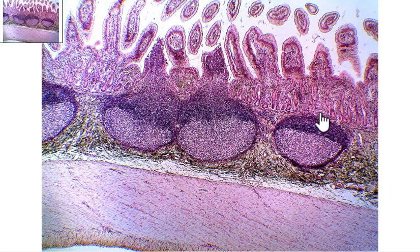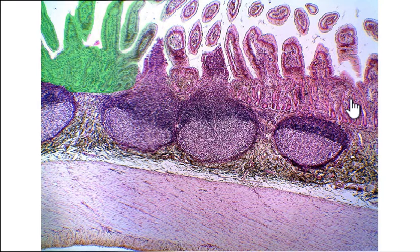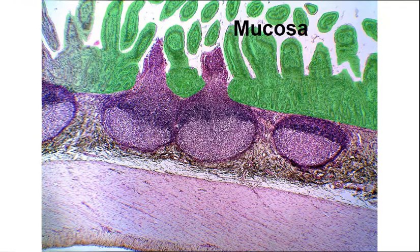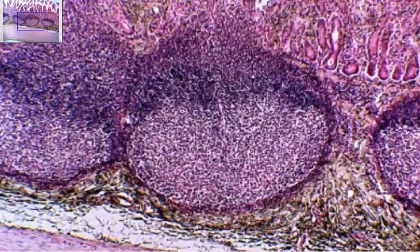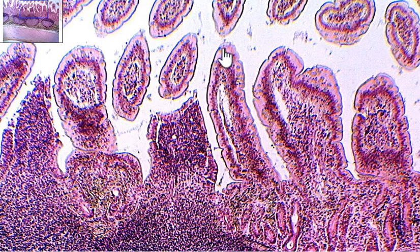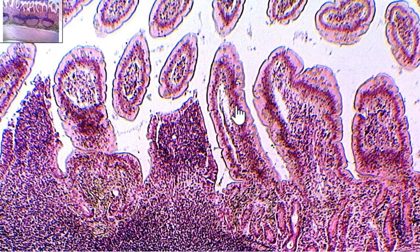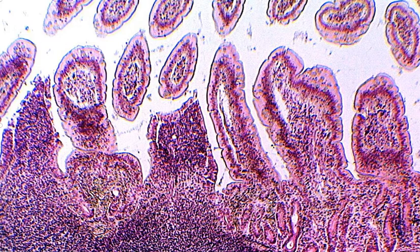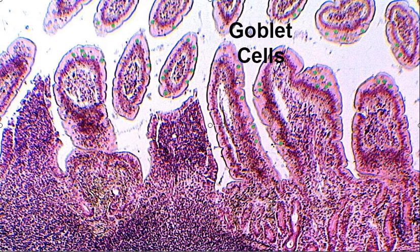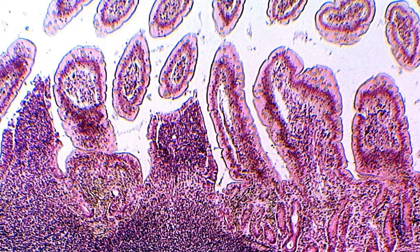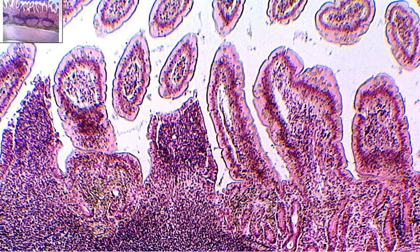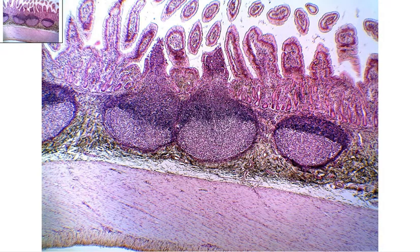Then up here, this is the mucosa. If you zoom in a little bit, you can see it is lined with simple columnar epithelium. You can see all these little tiny circles — those are goblet cells scattered throughout, so we have plenty of mucous secretion inside the ileum. This slide is the ileum, the distal portion of your small intestines.